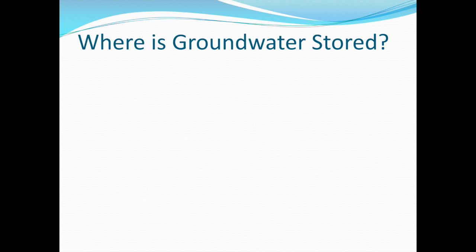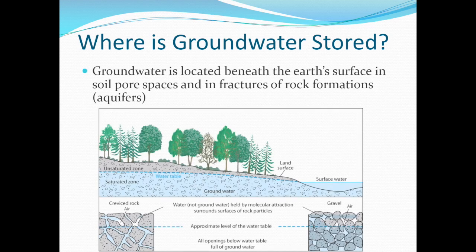Where is all that groundwater stored? We know it's under the ground, but the ground is solid, so where does all the water go? Groundwater is stored in the soil pore spaces and fractures of rock formations below the water table. The water table forms the boundary between the saturated zone and unsaturated zone. Water in the saturated zone is groundwater — all the spaces are completely filled with water. In the unsaturated zone, the pore spaces are filled with water and air; the water in this zone is not groundwater, it's just water held to the rock surfaces by molecular attractions.